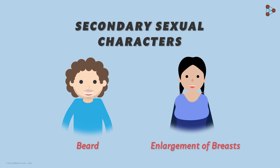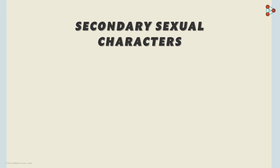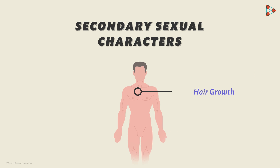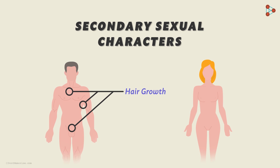So are there any other secondary sexual characters seen in males and females? Yes, of course! Apart from the growth of facial hair, the growth of hair on the chest, under the arms, and in the pubic region are other examples of secondary sexual characters. Similarly in females, apart from breast development, hair growth around the pubic region and under the arms is also seen.